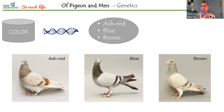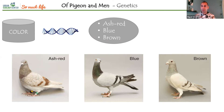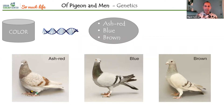Color is produced by melanin, just like we have melanin that gives us our skin color. The blue bird in the center is called blue or black — we prefer 'blue' in the hobby — and it's the wild type, the original bird. A mutation produced ash red, which is dominant over blue. Blue is dominant over brown, meaning brown is recessive to blue.